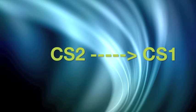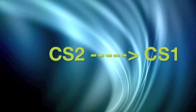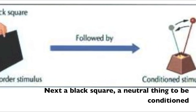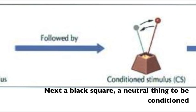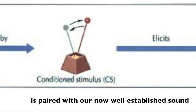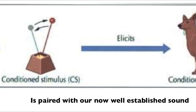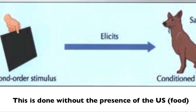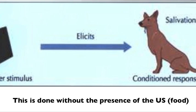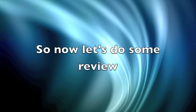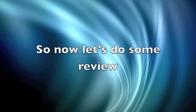It's a new CS2. We see it. A new neutral stimulus — a square — in the broken table condition, is paired with a now well-established conditioned stimulus. This is done without the presence of the unconditioned stimulus. So now let's do some review.